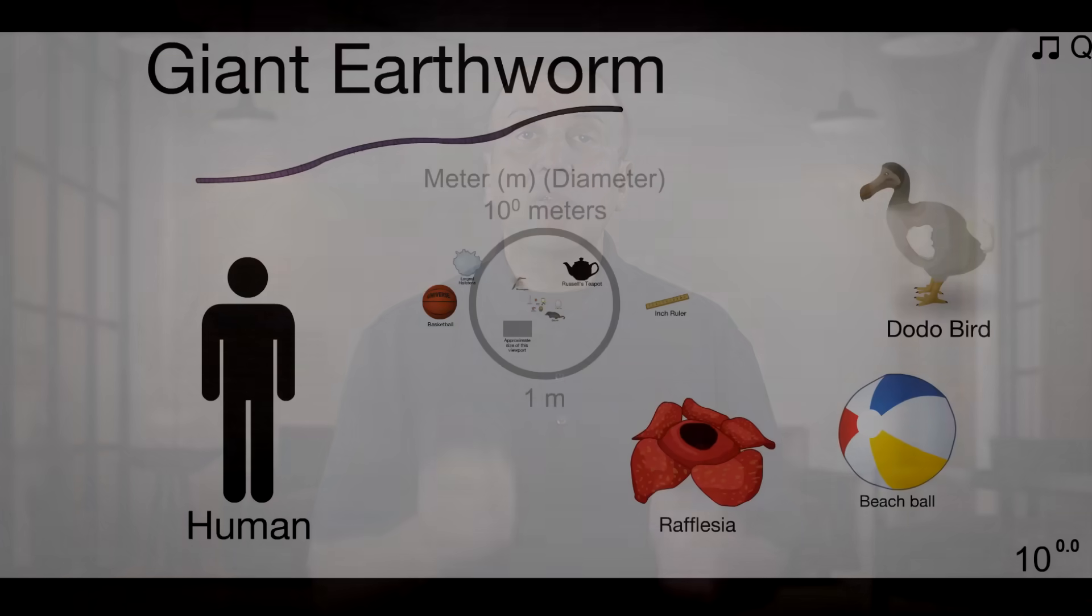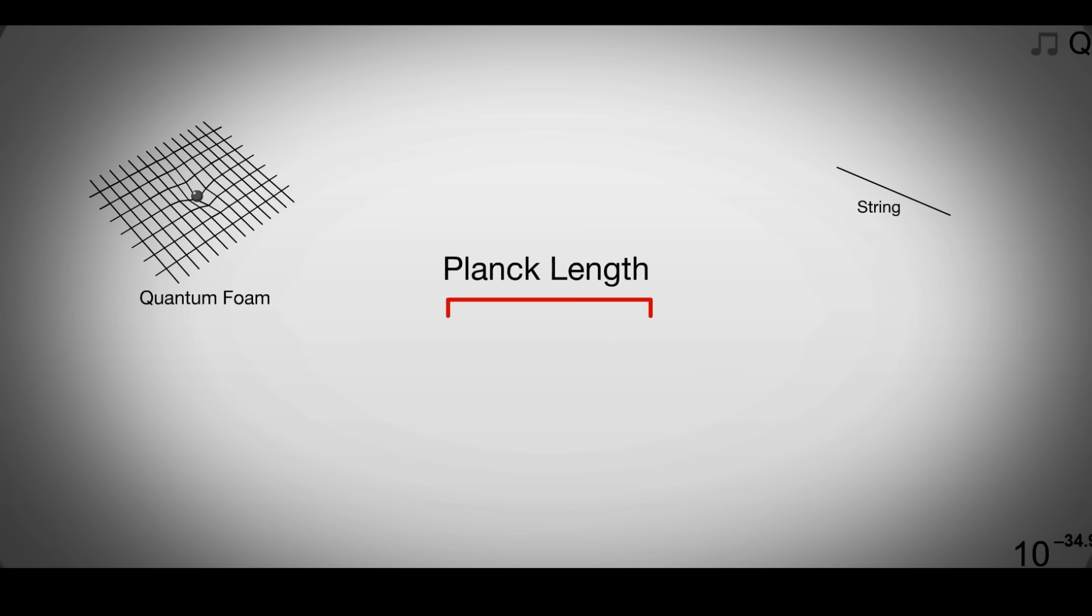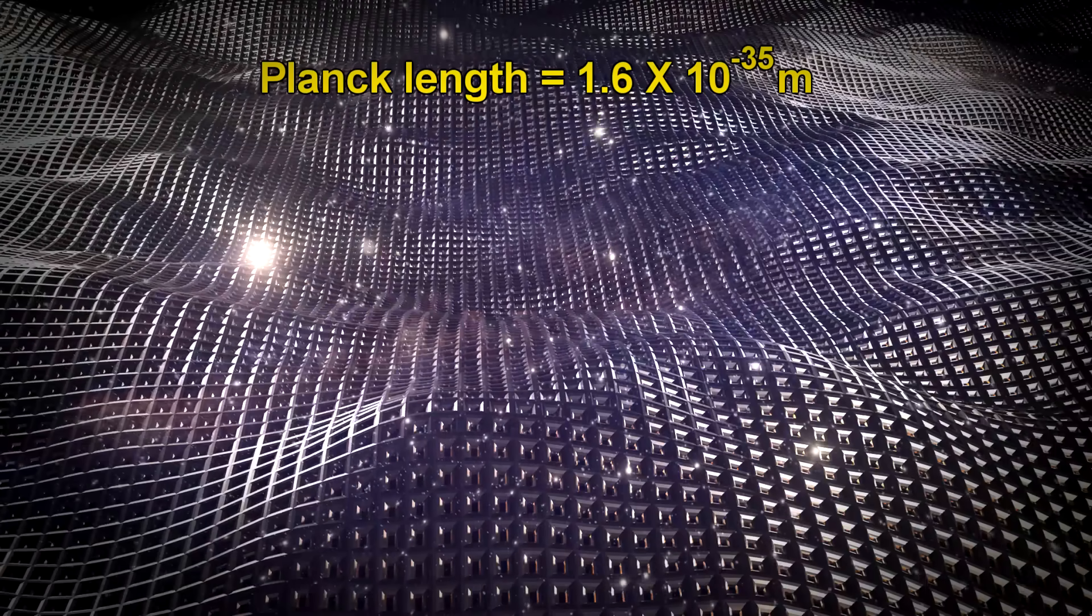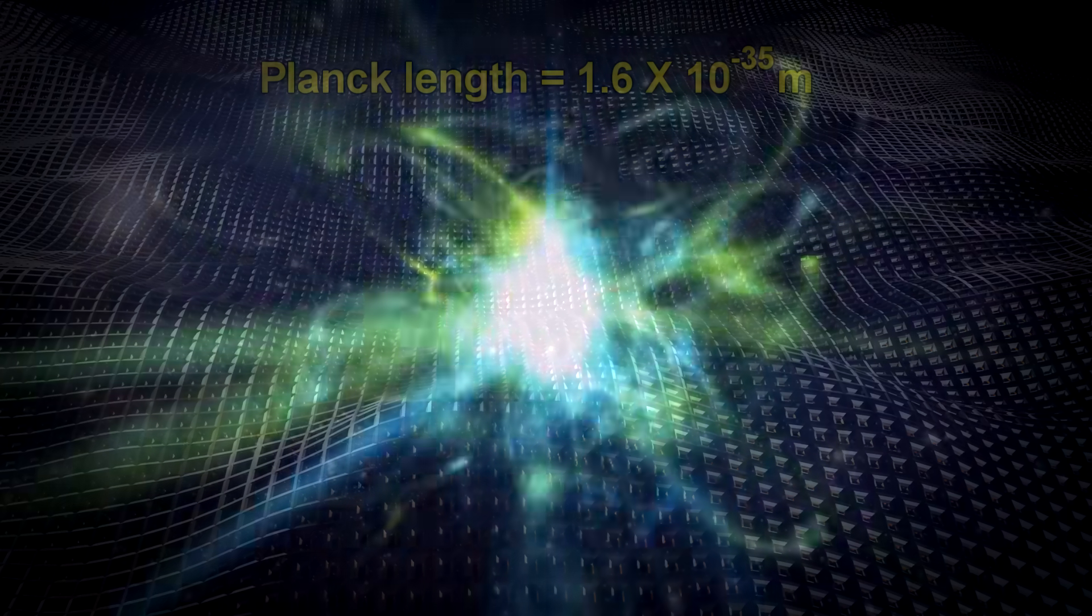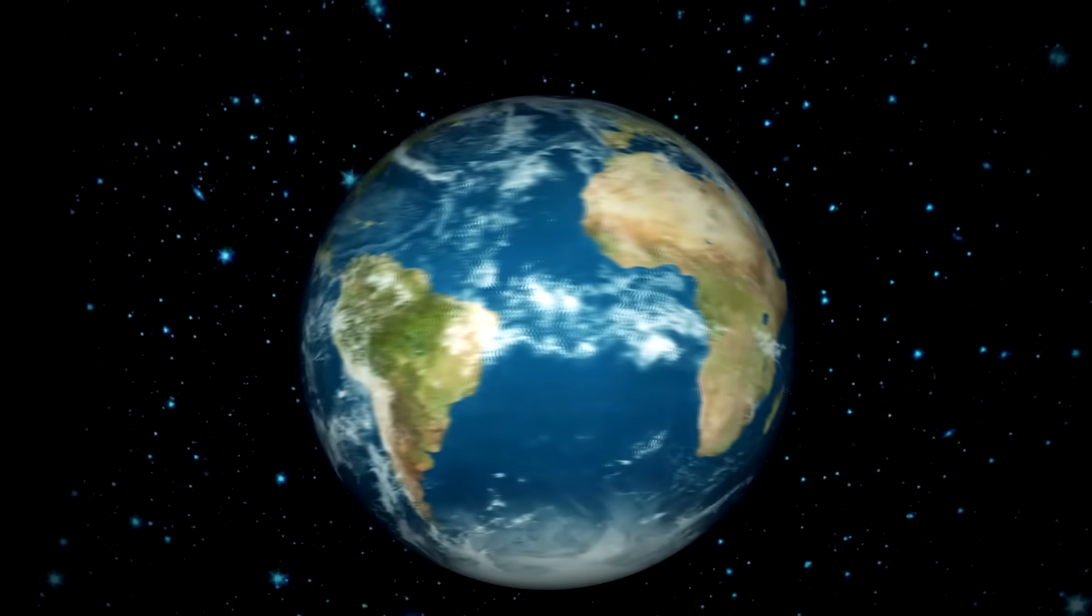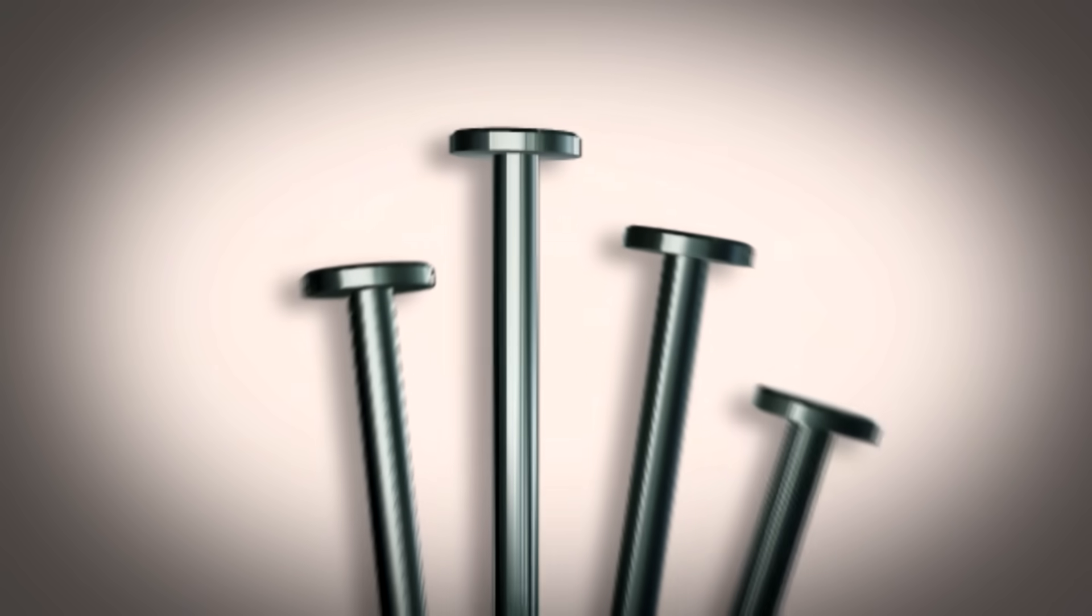What you may not have heard is that the universe is even smaller than it is large. For example, the smallest length theorized to be possible, the Planck length, is about 1.6 times 10 to the negative 35 meters. This is so small that if an atom was the size of the Earth, a Planck length would be much smaller than even the head of a pen.